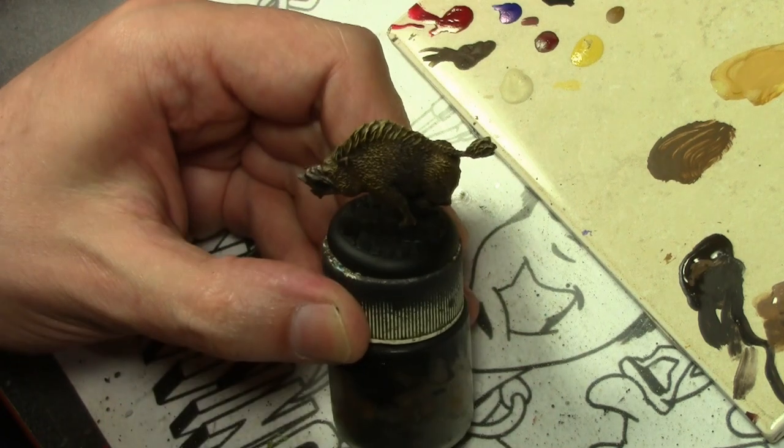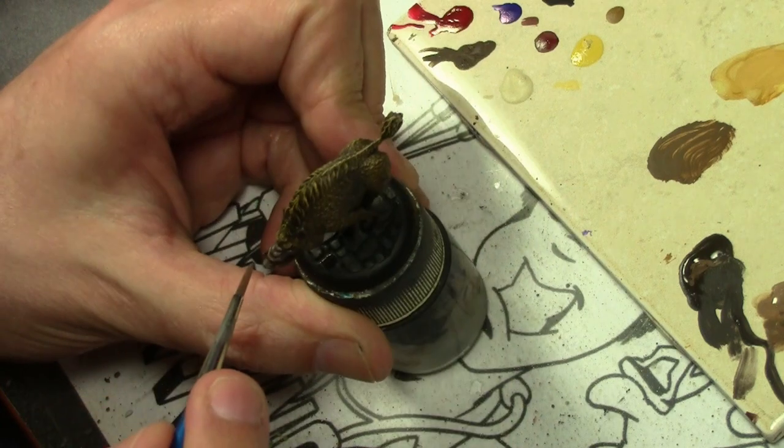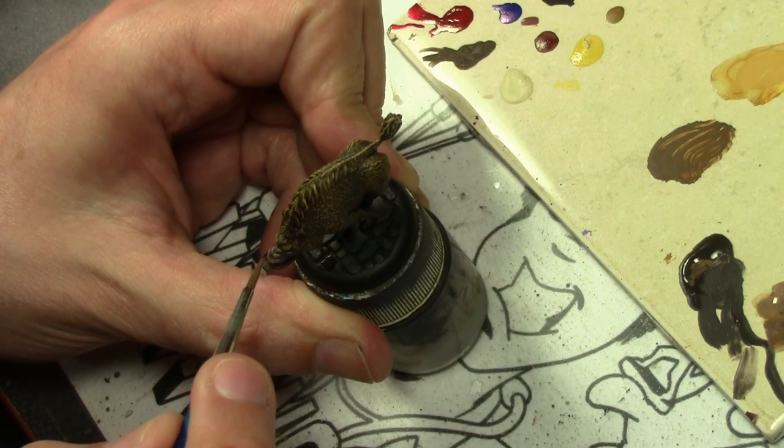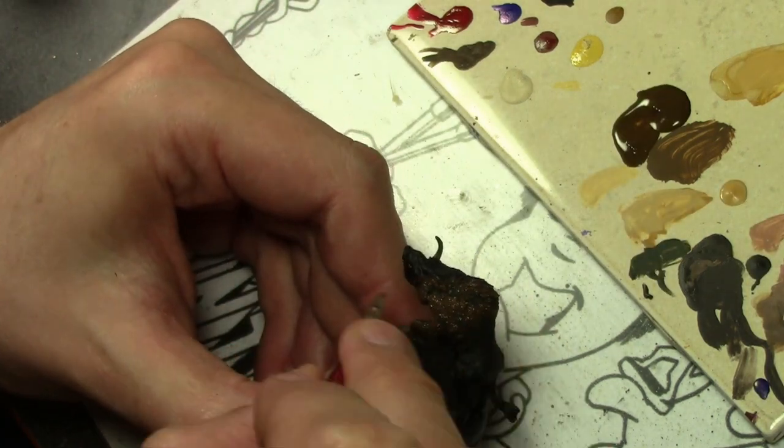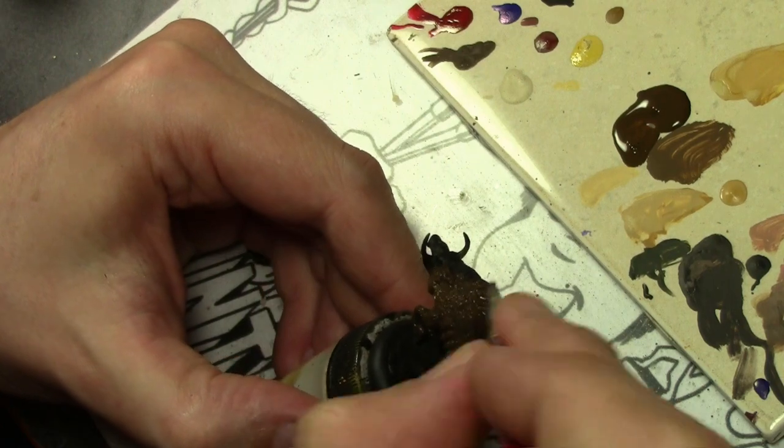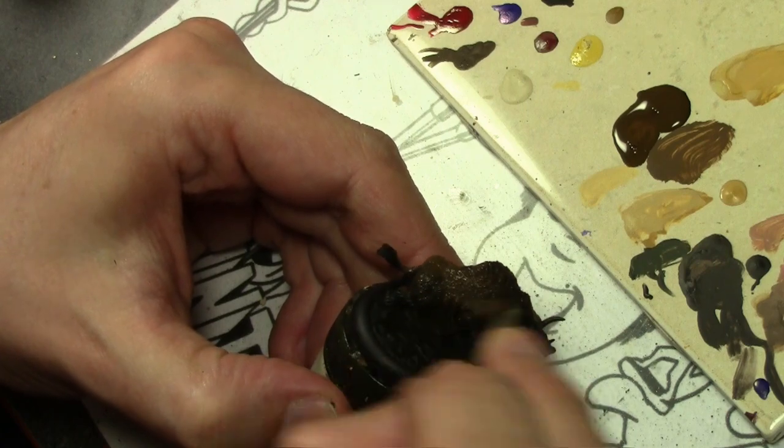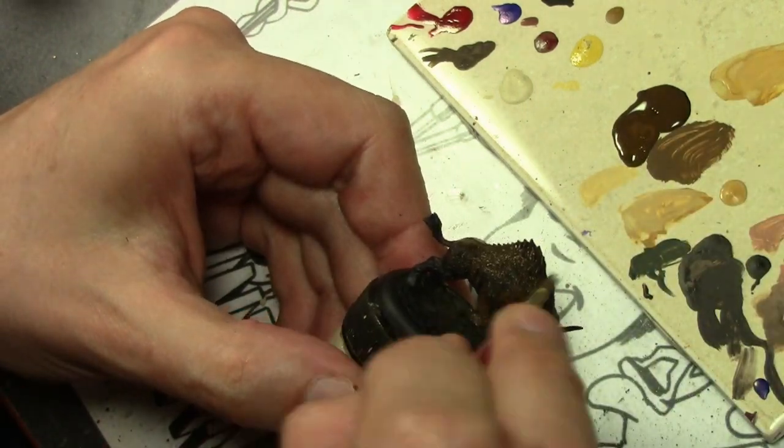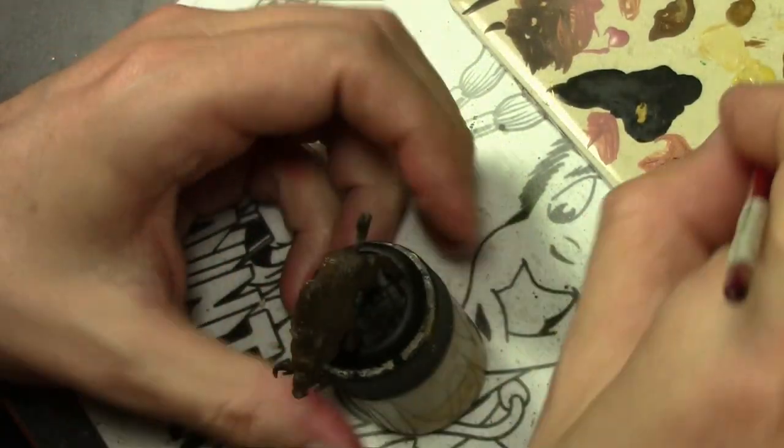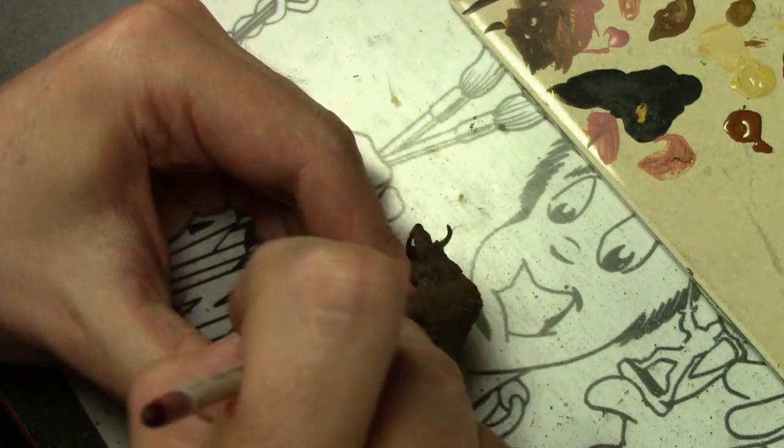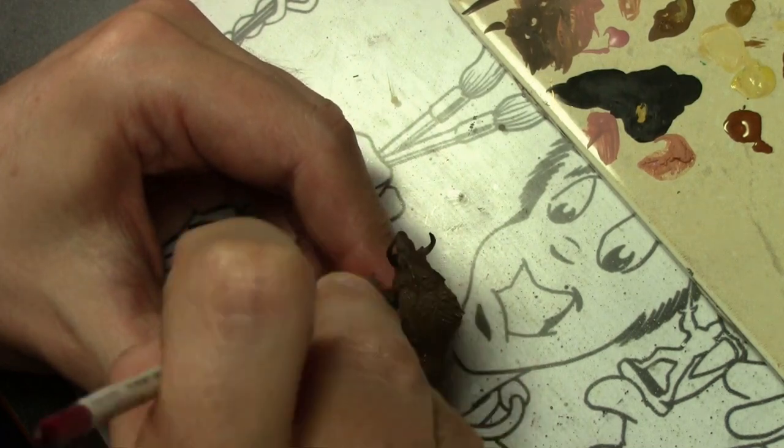With that we are done with this boar. However, we're going to paint two more here just to give you some ideas on different colors you can use on fur and a bit different techniques. For boar number two, starting off the same as we did before, this time using Vallejo Model Color Chocolate Brown. Then we are mixing in some Vallejo Game Color Beastie Brown to the Chocolate Brown. I kind of wanted a red fur for this one so he stands out from the brown one.